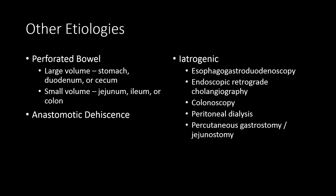There are many other etiologies for free intraperitoneal air that are less common than post-operative intraperitoneal gas. Bowel perforation is one of the more common reasons to have intraperitoneal air. When you see a large volume of free intraperitoneal gas, you should suspect perforation of the stomach or duodenum, or less commonly the cecum. Small volume free gas can be seen with the jejunum, ileum, or colon, as these often have less gas in them than the stomach, duodenum, or cecum.